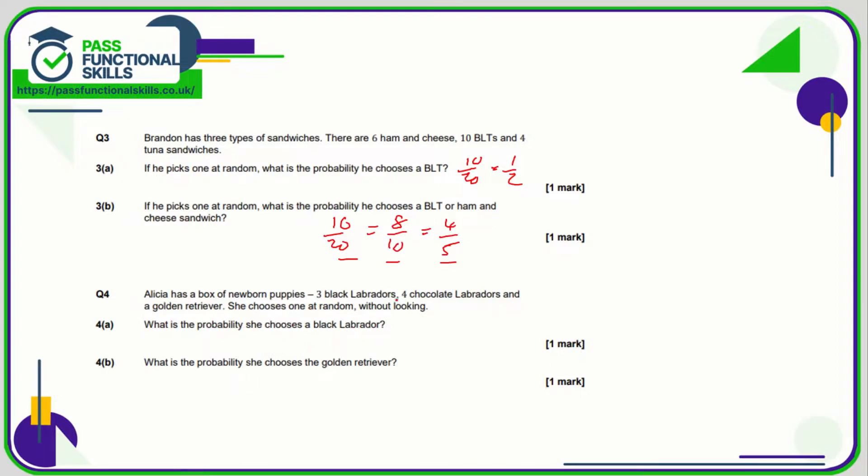Question number four: we know that in total there are eight dogs, so of the eight how many are black Labradors? There are three black Labradors, so the probability is three eighths. And there's only one golden retriever, so the probability is one eighth for the golden retriever.